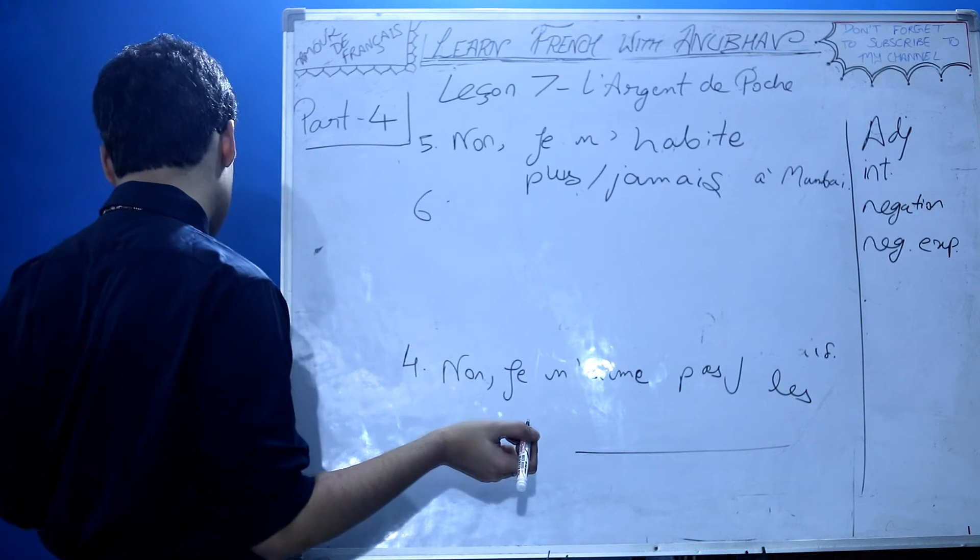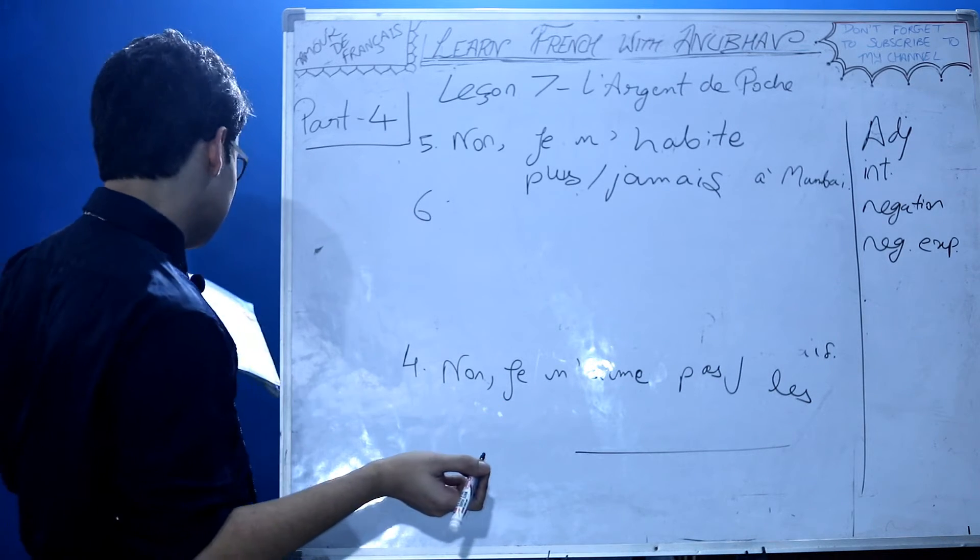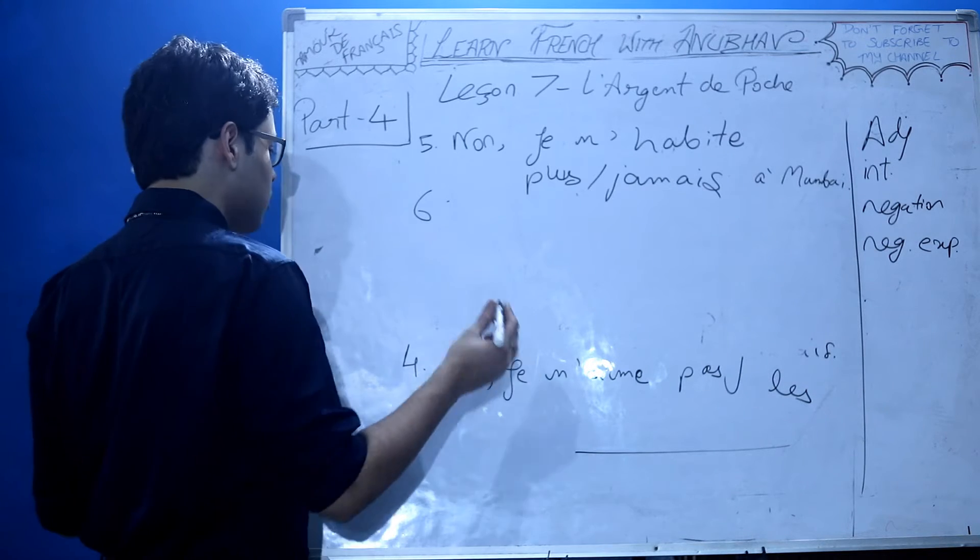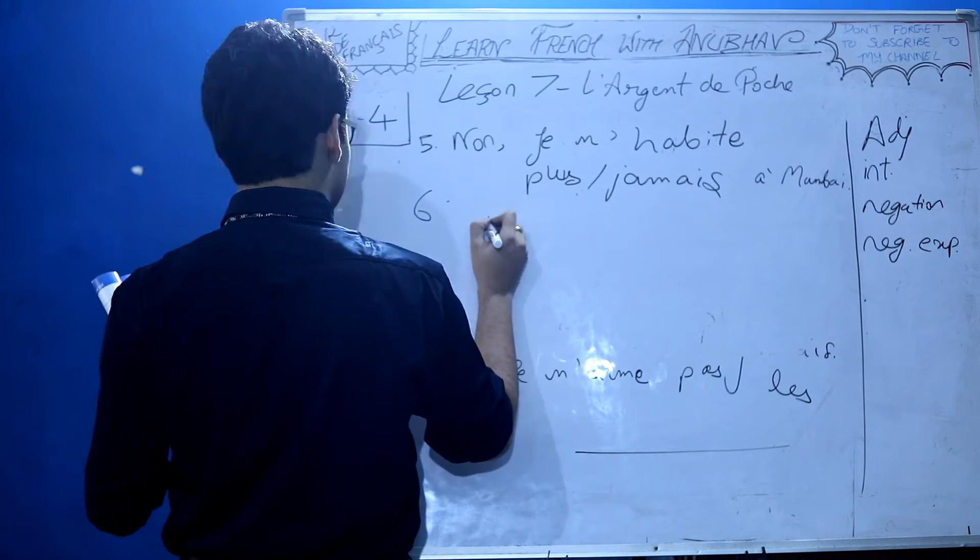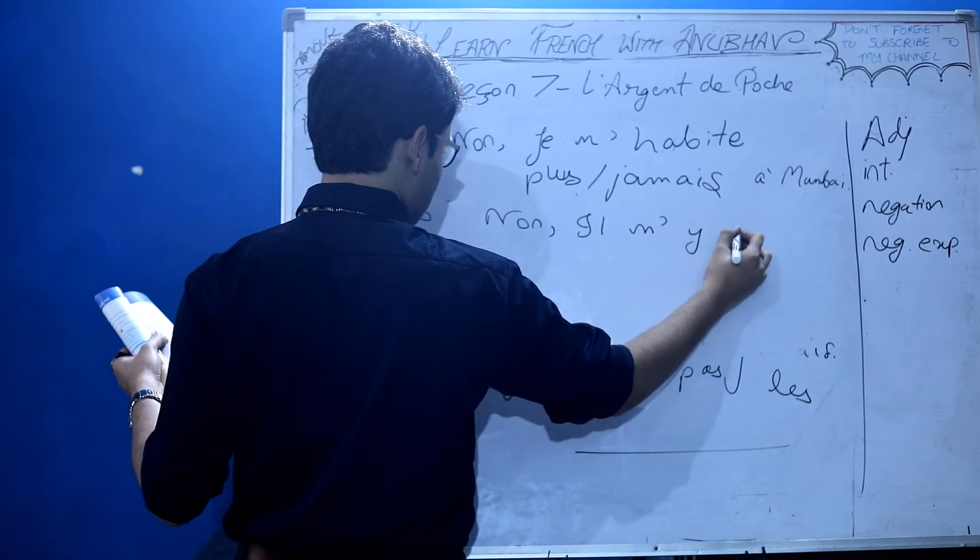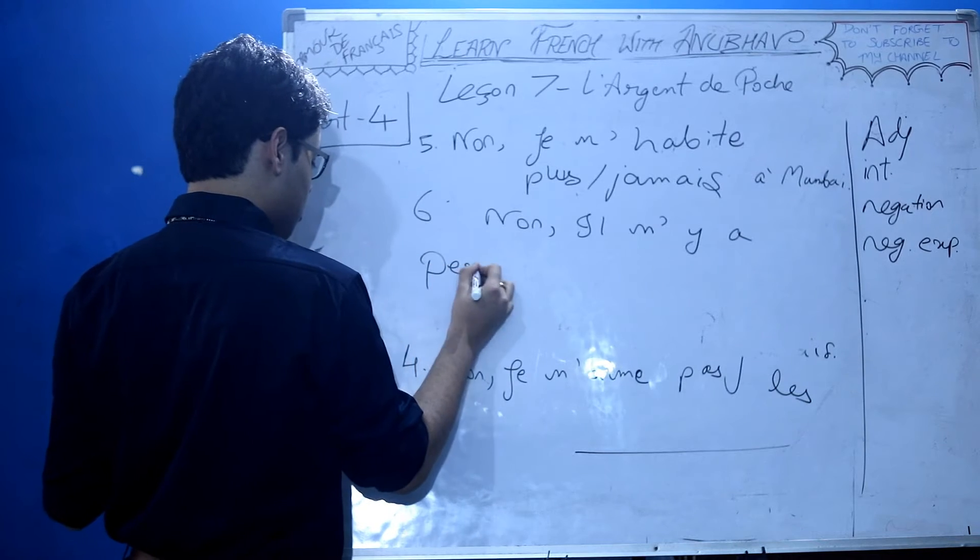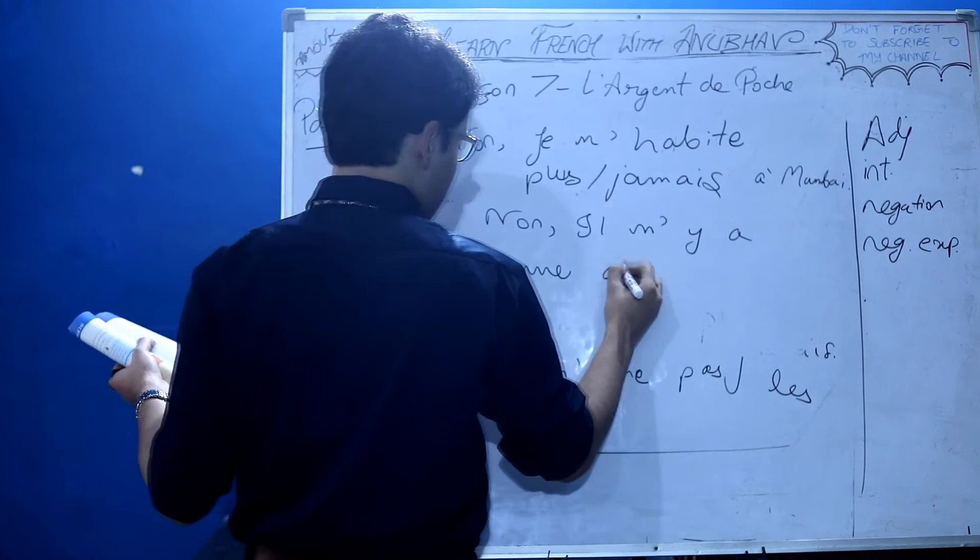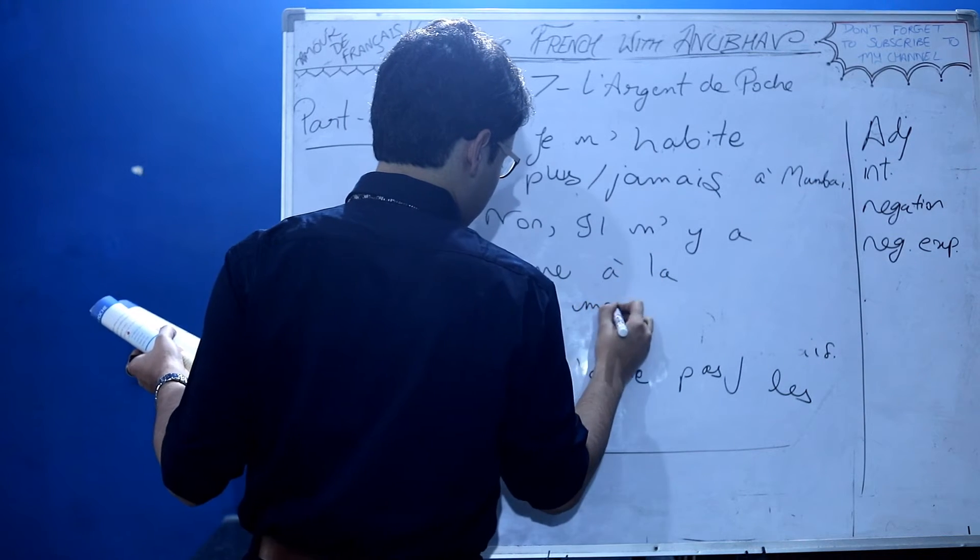Sixth: Il y a quelqu'un à la maison? Is there anyone in the house? No. Il n'y a personne à la maison. There's nobody in the house.